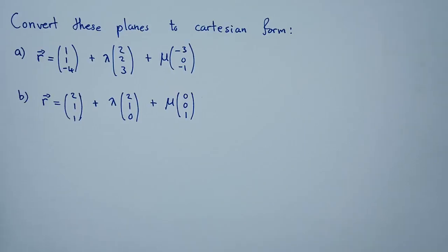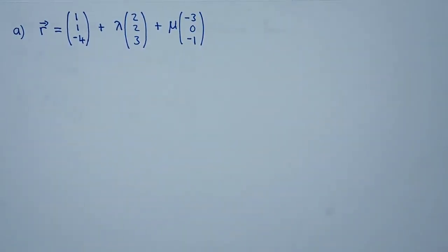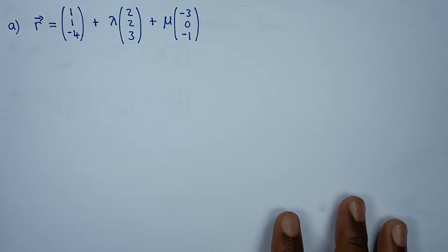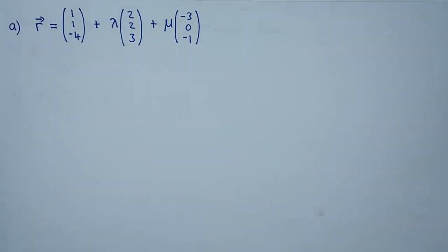Hi guys, we have these planes — let's see how we can convert them to Cartesian form. To start with the first one, it's important to know that we need to obtain firstly the XYZ vector. Once we obtain the XYZ vector, what we're obtaining is the metric form of this particular line.